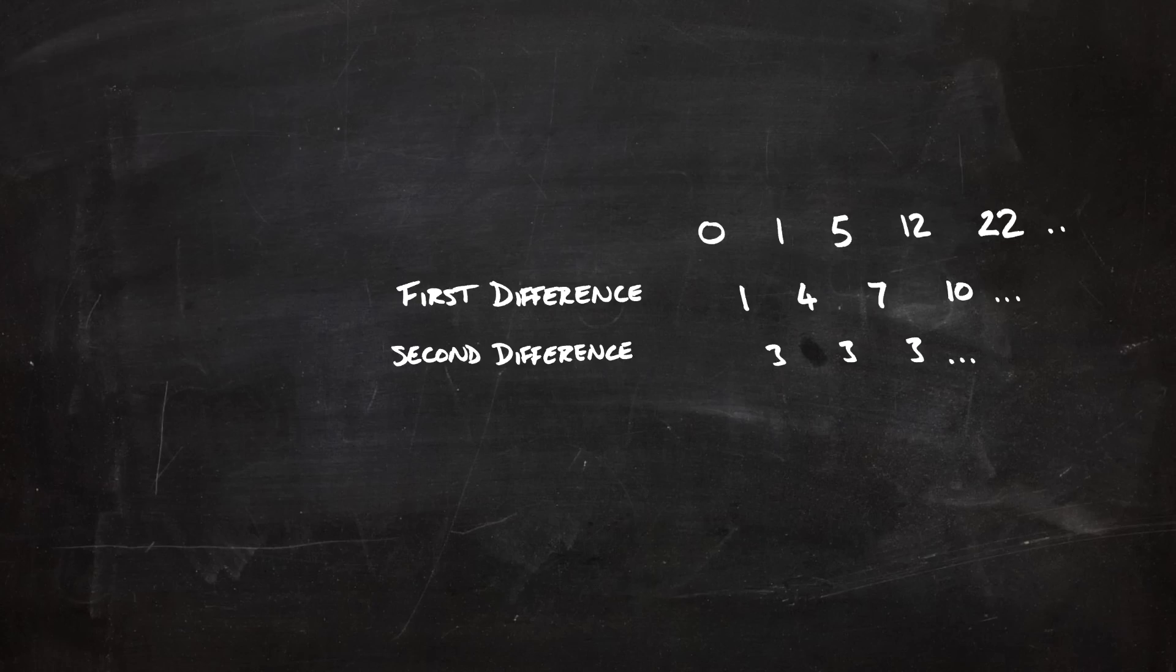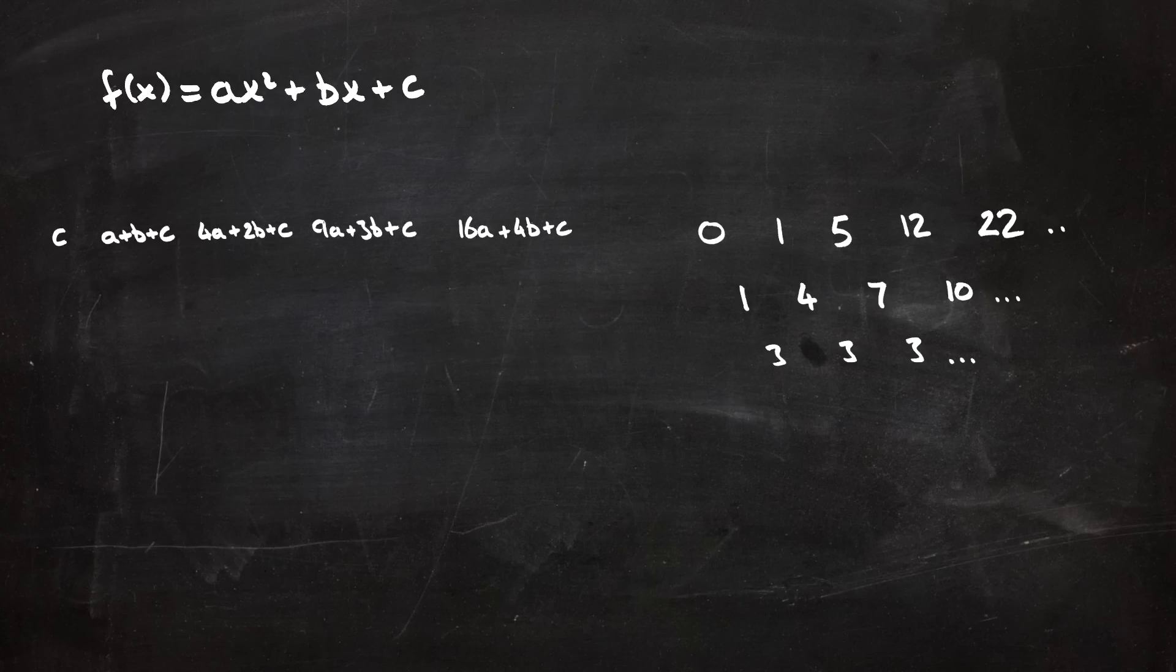So in this case, the second difference was a constant, so I think the formula is going to be of the form ax squared plus bx plus c, for some values a, b and c. So let's take that quadratic and do the same thing with that. On the top line, that is the quadratic, but evaluated at x equals zero, and x equals one, and x equals two, and x equals three, and so on.